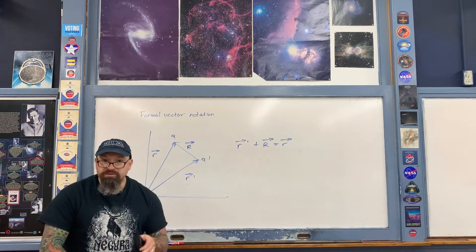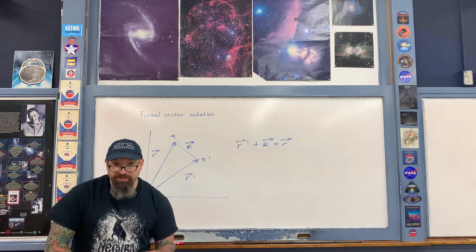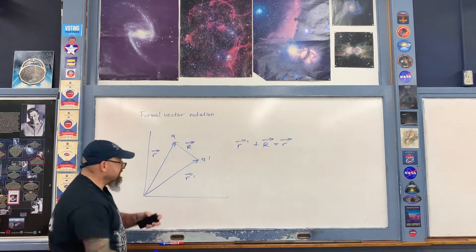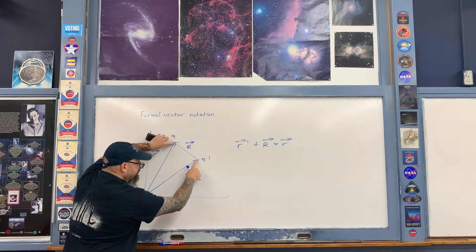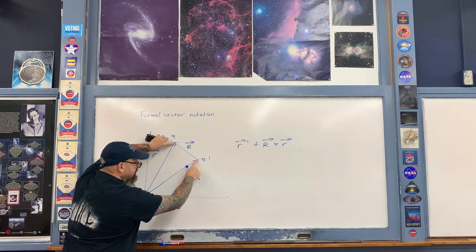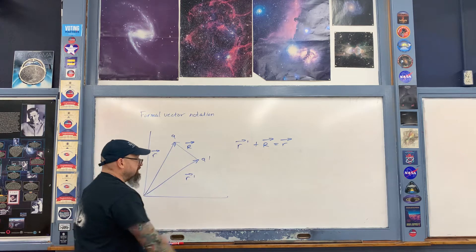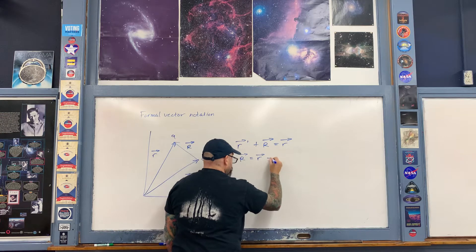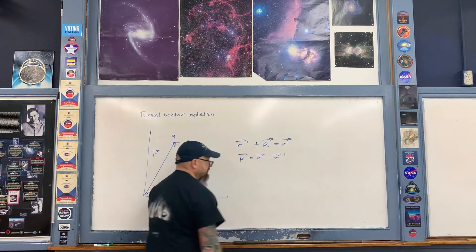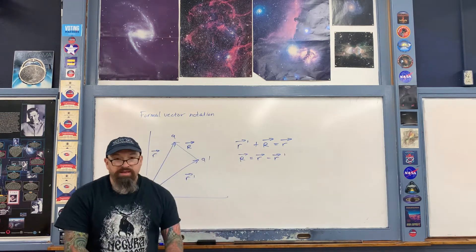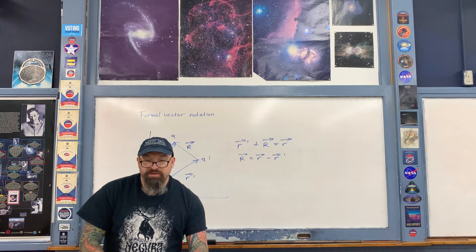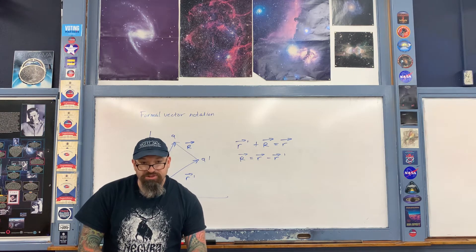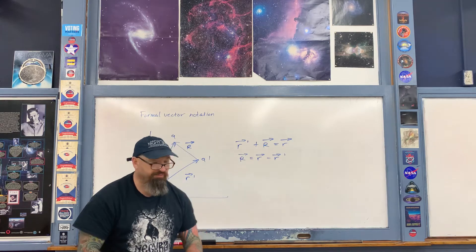The vector we want is capital R, because its magnitude describes the distance between the two charges. Rearranging the vector addition, capital R equals little r minus little r prime. In vector form, the force exerted on q due to q prime is then expressed using this capital R.